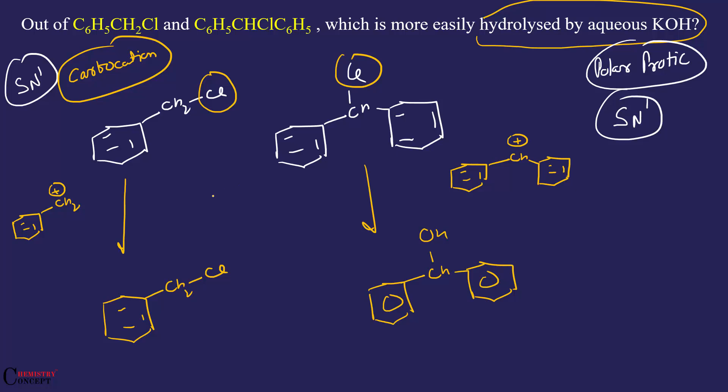This carbocation will be stable due to resonance. The first one has only one benzene for resonance, but the second one has two benzenes, so there will be more resonance.